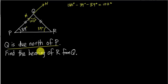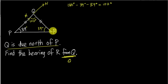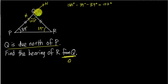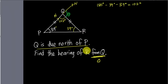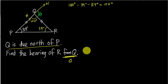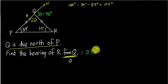The question asks for the bearing of R from Q, so the angle is measured at Q. From the north of Q, I rotate clockwise until I touch line QR. Since this angle is 102 and a straight line is 180, the remaining angle is 78. The bearing of R from Q is therefore 078 — always three digits.